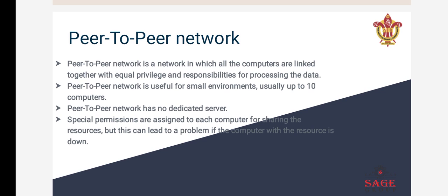Peer-to-Peer Network is basically useful for small environments where we have to attach only 10 computers at a time. We can use Peer-to-Peer Network in places like offices, companies, colleges, and schools. These are some examples where we can use Peer-to-Peer Network.